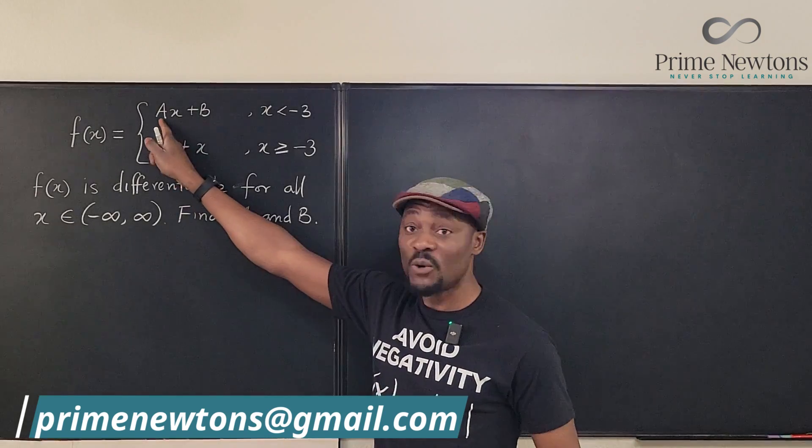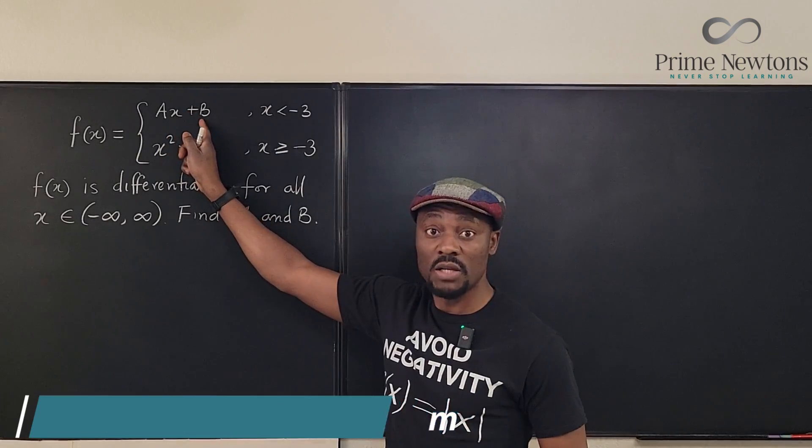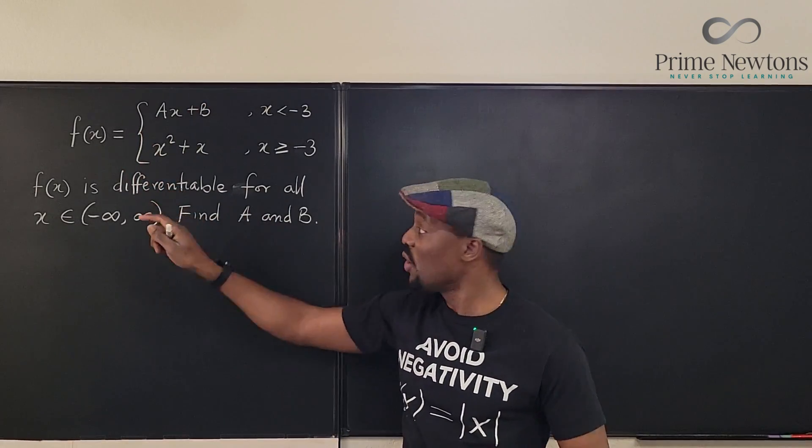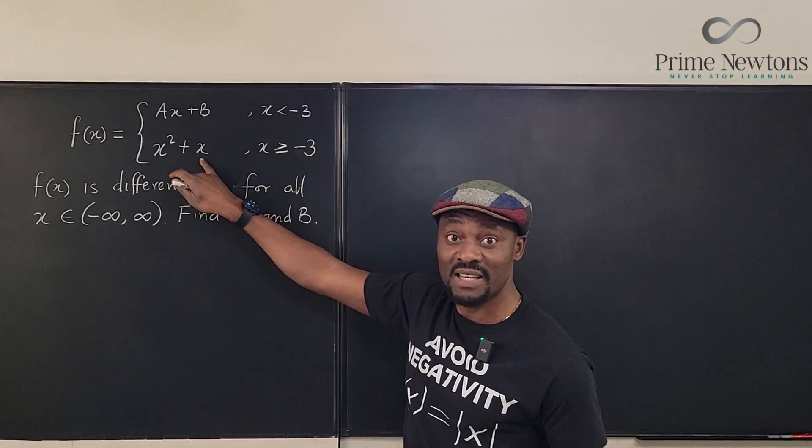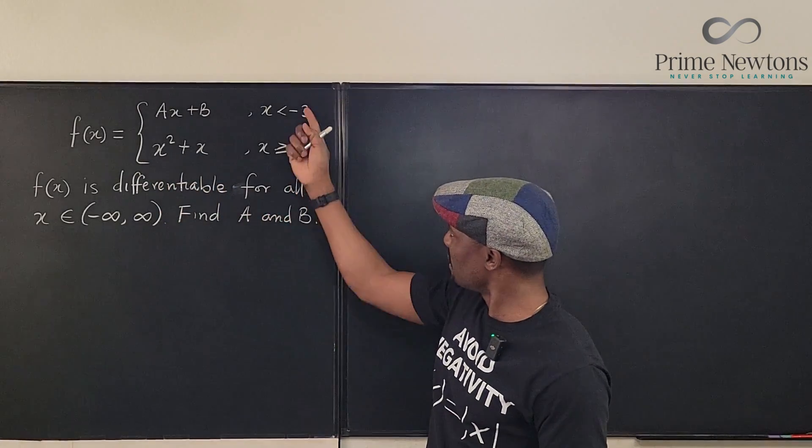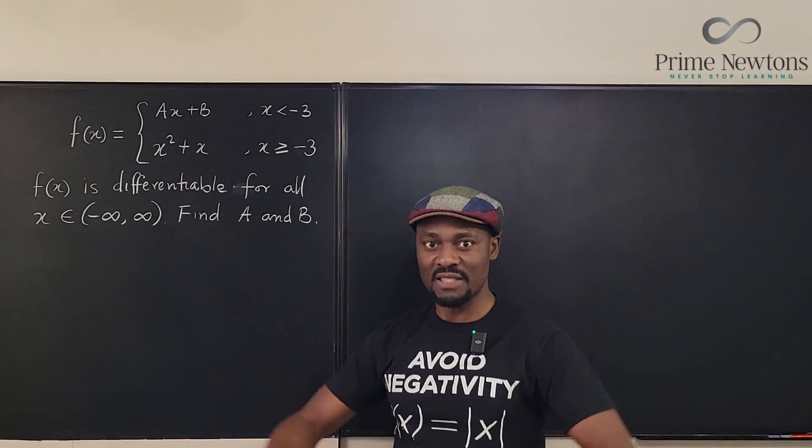We do not know the coefficient of x and we don't know the constant, but we know this is the equation of a line, of a straight line. We know that this is a quadratic, but if you fuse the two together, at some point here you're going to get the entire function.